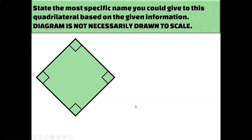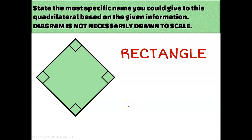What if I know that all four angles are right angles — or equivalently, all four angles are congruent? Well, if that's all I know, the best I can do is call it a rectangle. I can't call it a square because I don't know anything about the sides. All I know is that all four angles are the same, so it must be a rectangle.